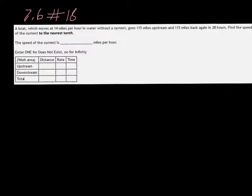A boat which moves at 14 miles per hour in water without a current goes 115 miles upstream and 115 miles back again in 28 hours. Find the speed of the current to the nearest tenth.